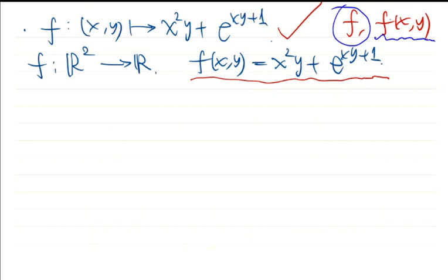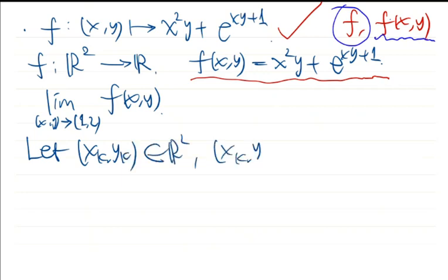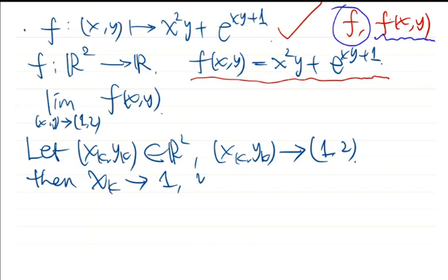This is a function defined on ℝ². If we want to compute the limit as (x,y) goes to (1,2) of f(x,y), we ask: does this limit exist, and if so, what is its value? To study this, we let (x_k, y_k) be a sequence in ℝ² converging to the point (1,2), so x_k converges to 1 and y_k converges to 2.